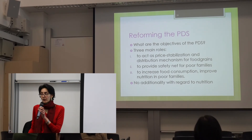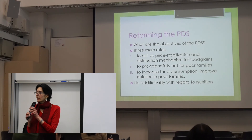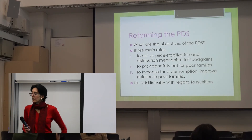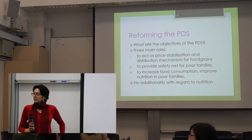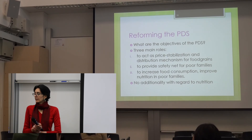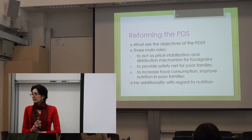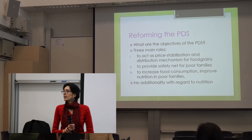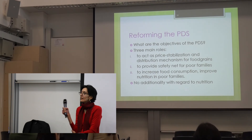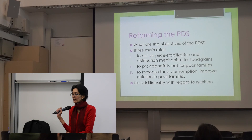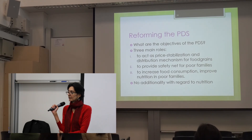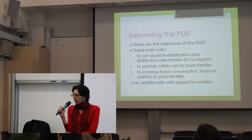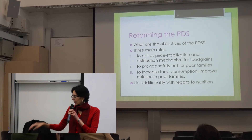My main argument is around the third objective: if the goal is to increase food consumption or improve nutrition for families, this is not working. The PDS is not working, and even the shift to cash transfers — judging by what poor households do with increases in income — is unlikely to improve nutrition. So devoting resources to reforming the PDS becomes a questionable way to go if the goal is better nutrition.